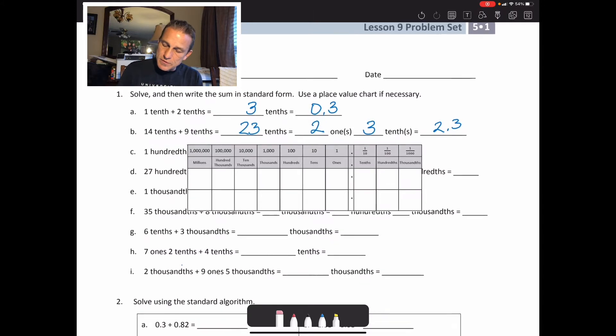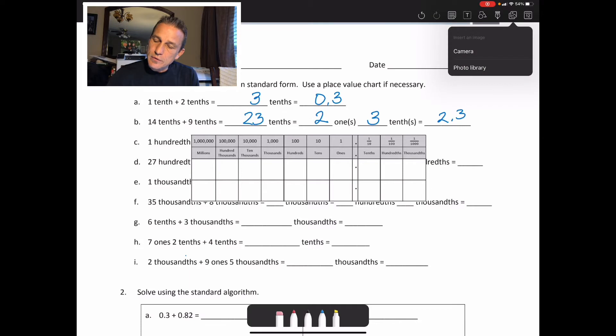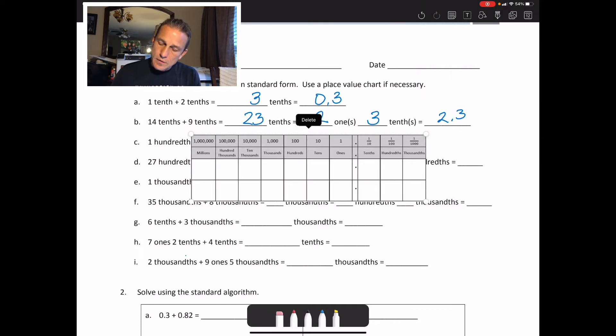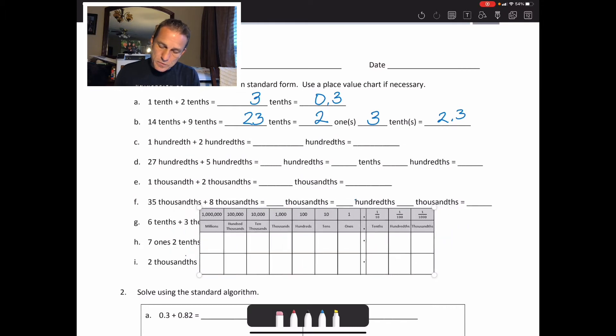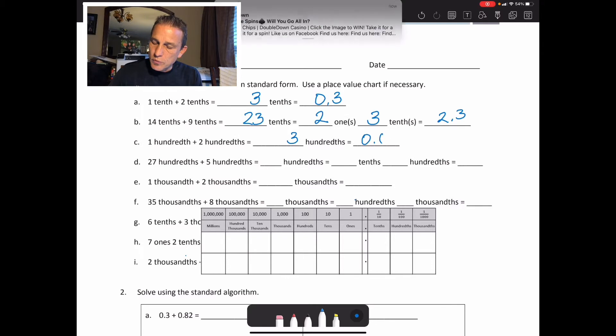Okay, let's do the next one here. We have 1 hundredth plus 2 hundredths. So that would be 3 hundredths. That's not too bad. So we write that in standard form, 0.03.